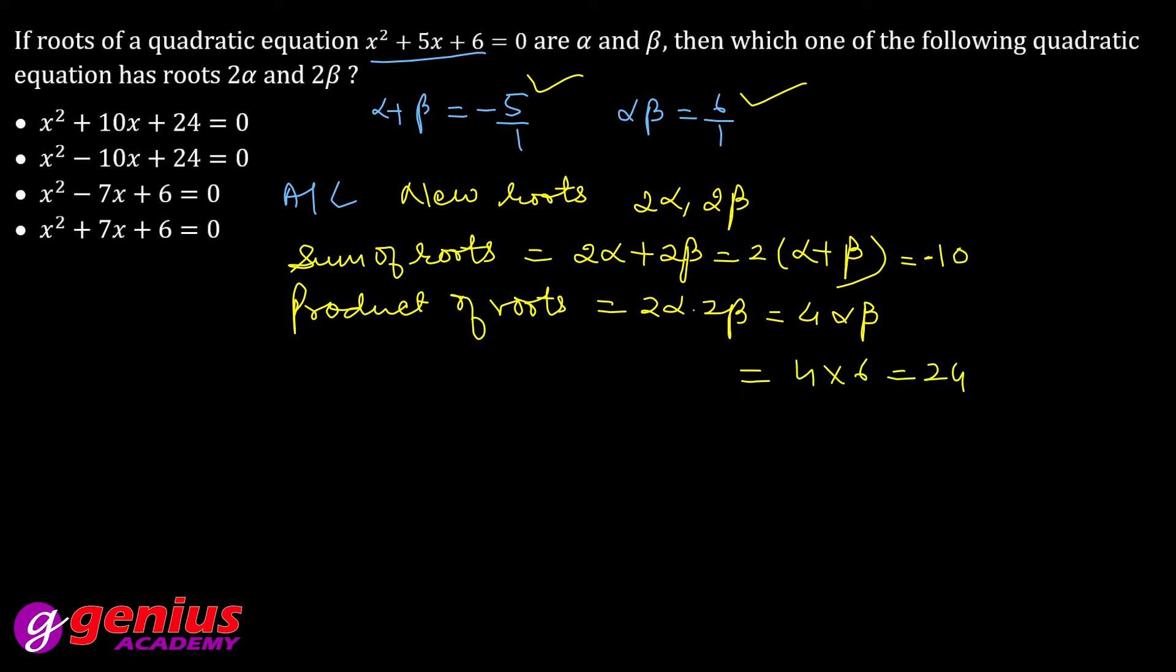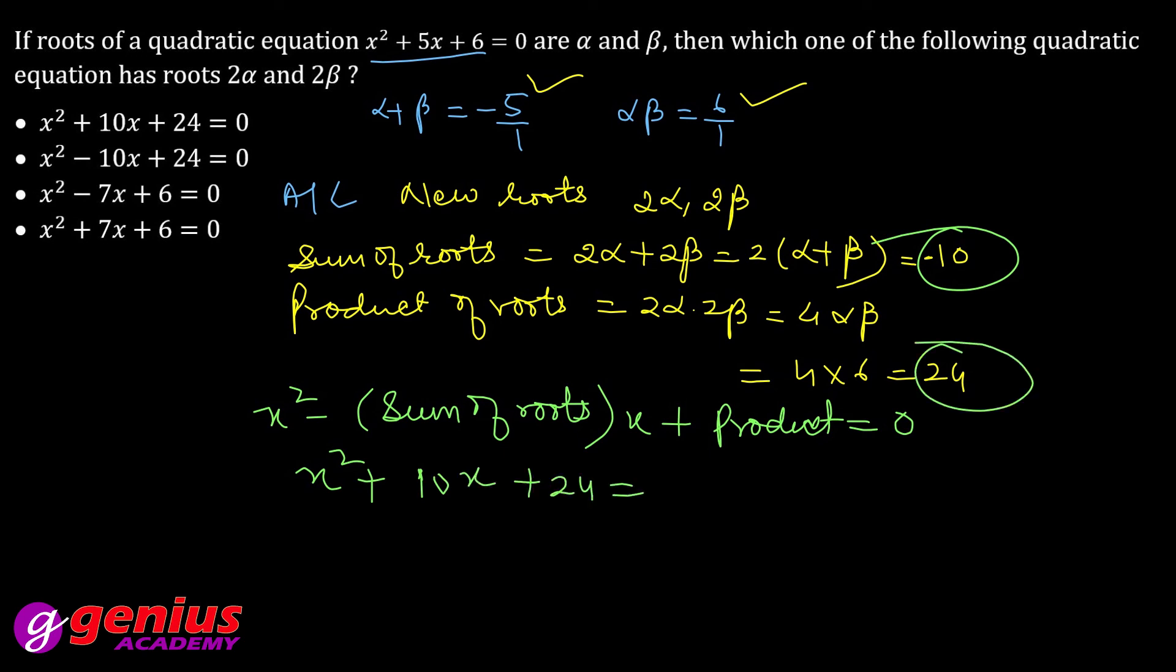We know that the quadratic equation is x square minus sum of roots times x plus product of roots equal to 0. So x square minus minus 10 x plus 24, which is x square plus 10x plus 24 equal to 0. Final answer.